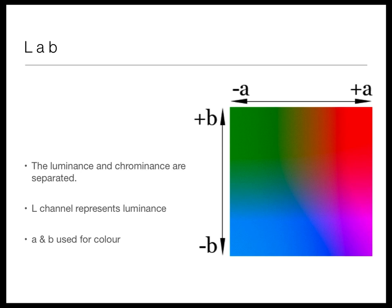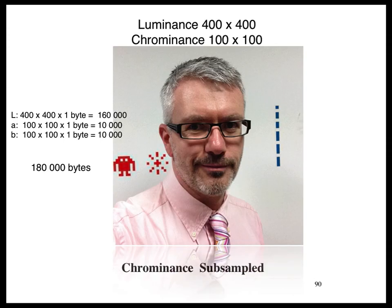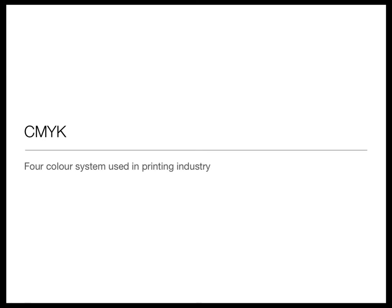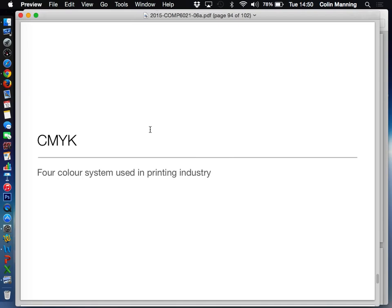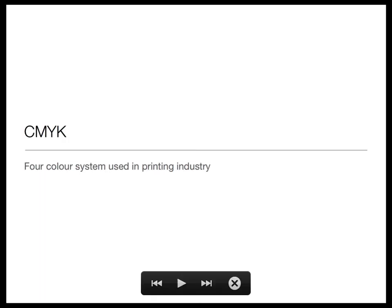So in situations where you were storing images for analog TV you would have used something like a Lab color system. Some of the first console or gaming systems required you to convert everything to Lab to work well on an analog TV. We see less and less of it now, except in situations where we're going to start throwing some information away.